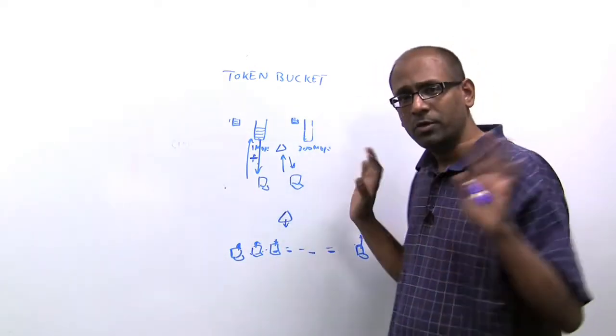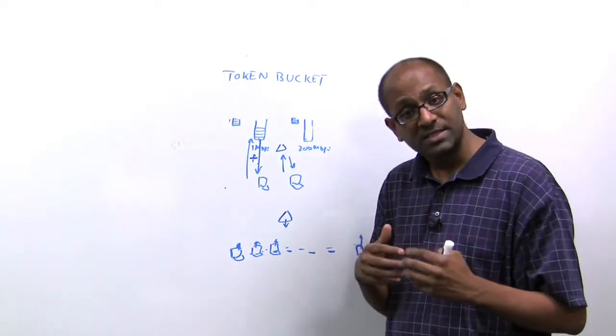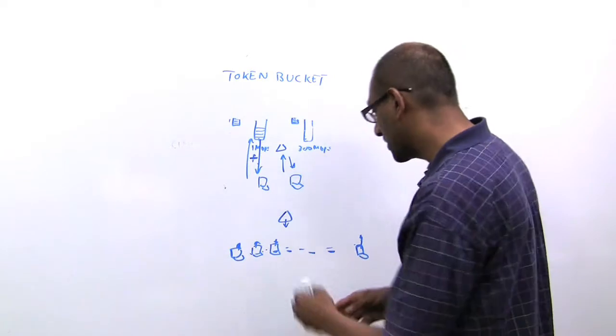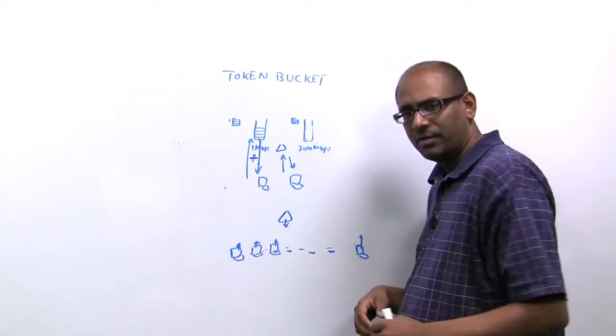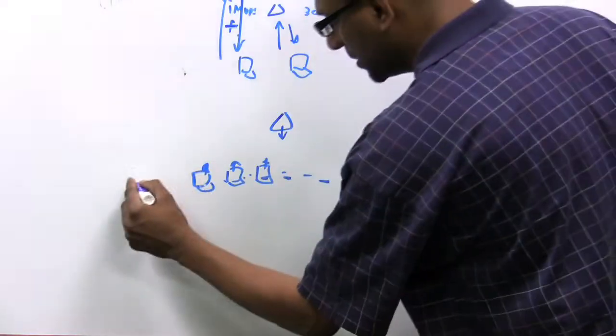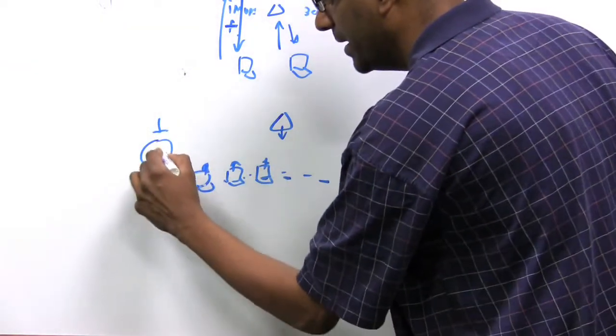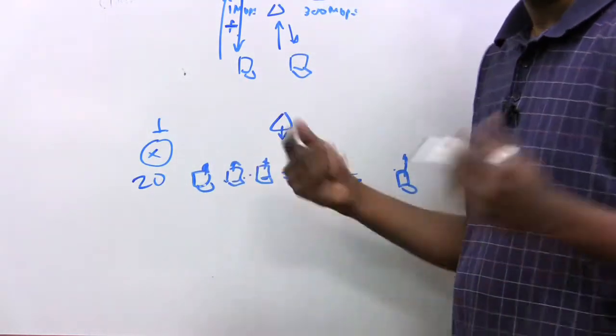If you do absolutely nothing, if you do a laissez-faire approach where every radio essentially uses the same contention parameters, notice each of these devices will effectively get 1 over 21 of the channel. There are 20 uplink devices and one downlink device. Total of 21 contenders for a shared medium, therefore each of them gets 1 over 21.